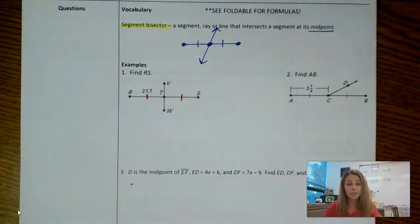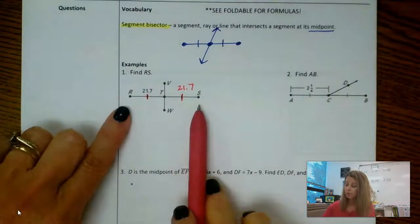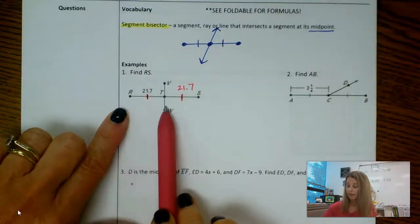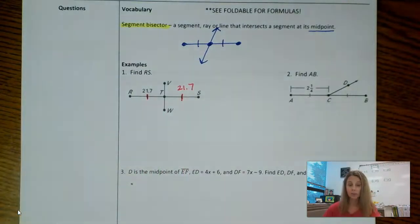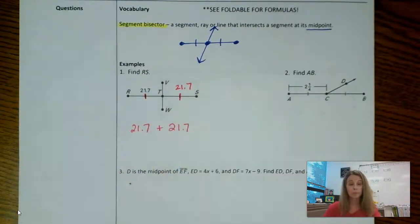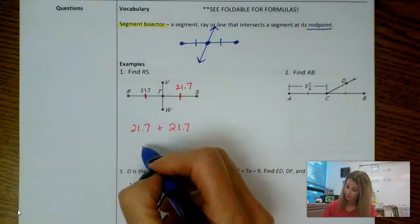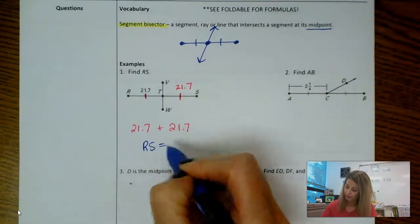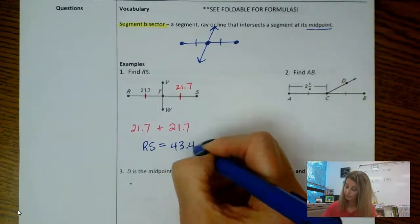Tick marks mean that those two lengths are equal. So I'm going to jot down 21.7 over here. If I need the whole length, I can apply that segment addition postulate. I can add this piece plus this piece, and then I will get the total. So I can do 21.7 plus another 21.7, and then that will give me the total length. So I'm going to say that RS equals 43.4.